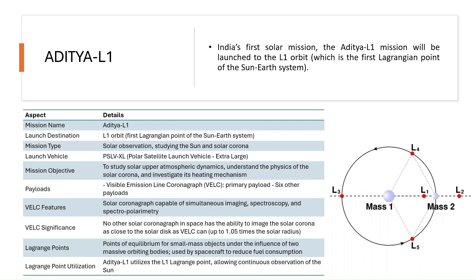India's solar mission Aditya-L1 was launched to the L1 orbit, which is the first Lagrange point of the Sun-Earth system, using the PSLV-XL. Lagrange points are points of gravitational equilibrium where a small mass object, under the influence of two massive orbiting bodies, can maintain a stable position. This can also be used by spacecraft to reduce fuel consumption.